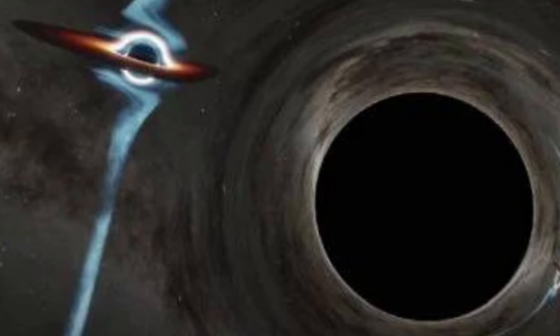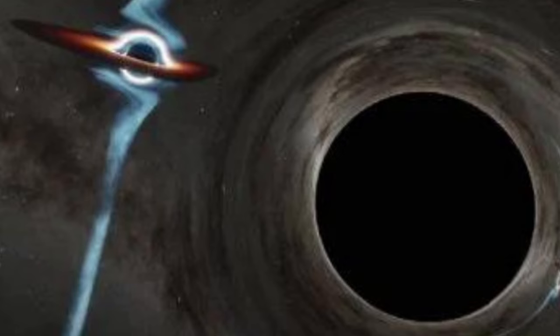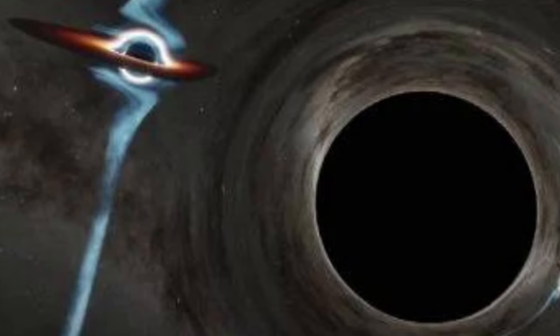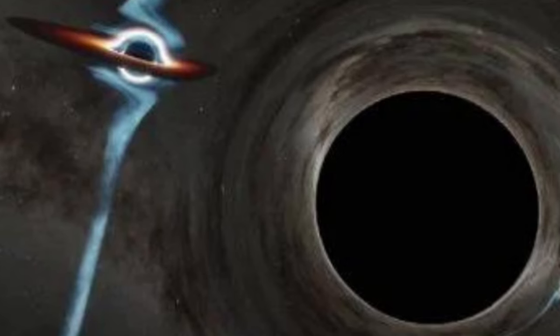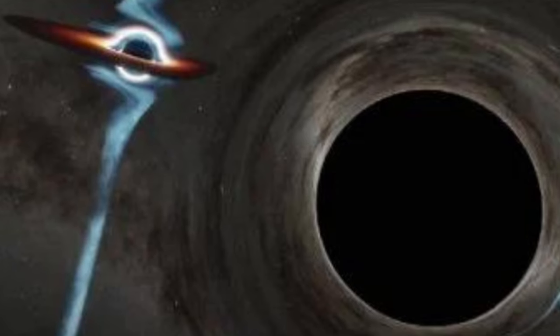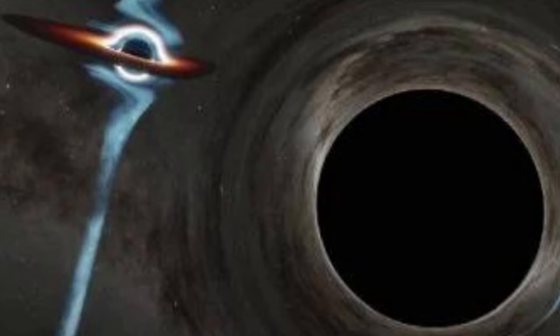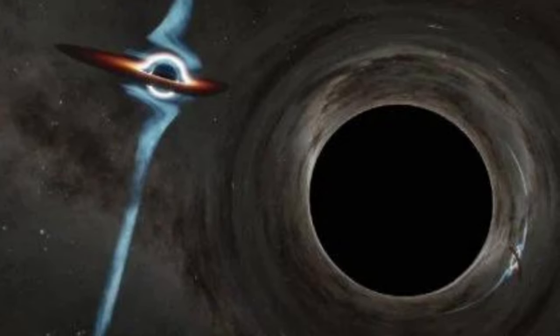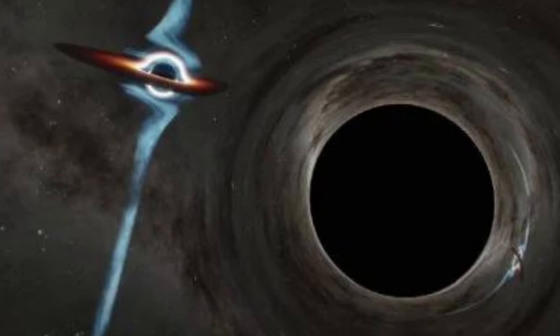Some quasars blast jets of plasma almost at light speed from the polar regions of the black hole, funneled along and accelerated by magnetic field lines around the object's exterior. PKS 2131 is a quasar blasting out a jet right in the direction of Earth, making it what we call a blazar.